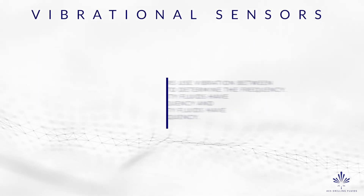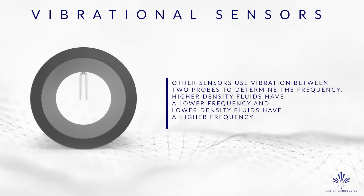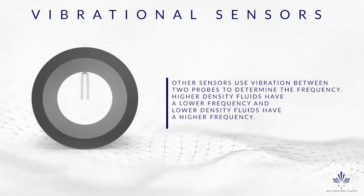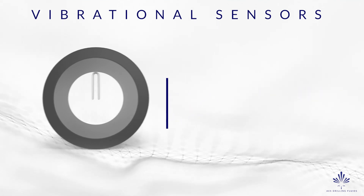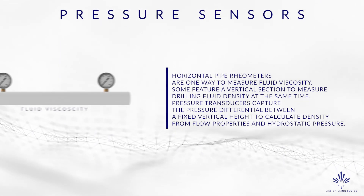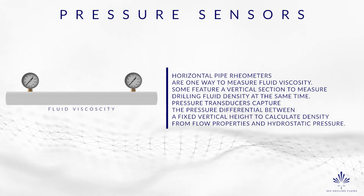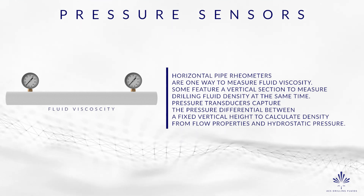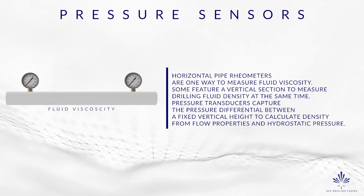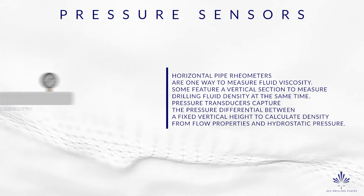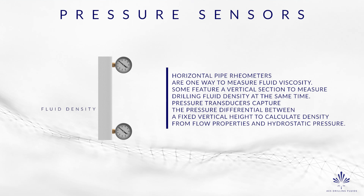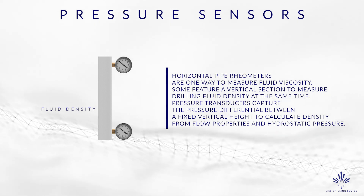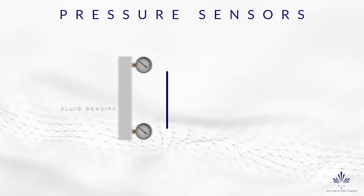Other sensors use vibration between two probes to determine the frequency — higher density fluids have a lower frequency and lower density fluids have a higher frequency. Horizontal pipe rayometers are one way to measure fluid viscosity, but some also feature a vertical section to measure drilling fluid density at the same time. Pressure transducers capture the pressure differential between a fixed vertical height to calculate density from flow properties and hydrostatic pressure.